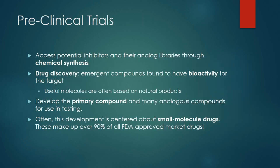Preclinical trials refer to the lab work portion of the drug development process. In this stage, workers use experimental strategies to access potential inhibitors and analog libraries, or similar structures, through chemical synthesis. For inspiration, chemists often look to natural products that have useful abilities for the target protein. When testing the primary compound, or the most useful one, it's always good to have more options, so a chemical library is built up of similar structures.